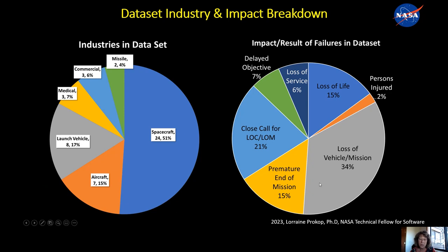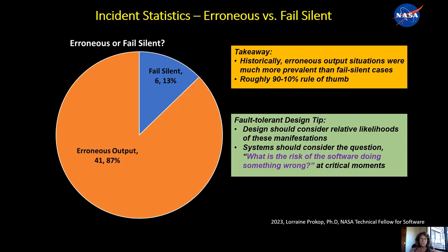34% caused loss of mission, 15% resulted in loss of life. Some are a little less severe: end of mission, close call, delayed objective, or loss of revenue or service. Out of all these cases, 87% of them were erroneous and 13% were fail silent. So historically, erroneous is much more common, and design should always consider erroneous as the more likely thing to happen.